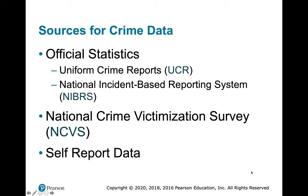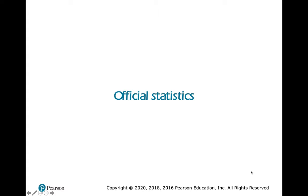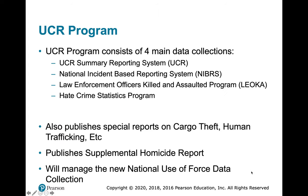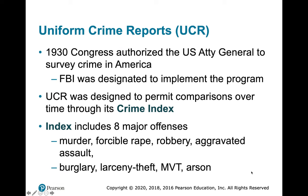Crime data comes from official statistics, victimization surveys, and self-report surveys. The first set of official statistics is the UCR — the Uniform Crime Report — which is made up of four main data collections: the actual UCR, NIBRS, law enforcement officers killed and assaulted, and the hate crime statistics program. In 1930, Congress authorized the attorney general to survey crime in America and designated the FBI as the agency in charge of implementing this program.